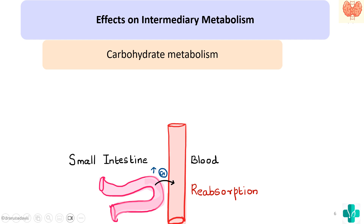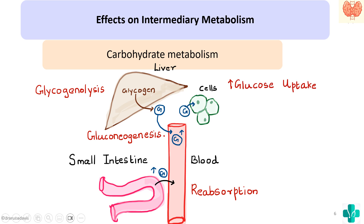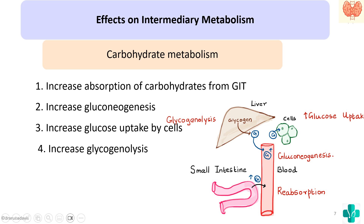Secondly it will promote gluconeogenesis — producing more glucose from other sources. It will also stimulate glycogenolysis, since glycogen is a storage form of glucose. The thyroid hormone will also increase the uptake of glucose by the cells. So in summary: it increases reabsorption of carbohydrate from the GI tract, increases gluconeogenesis, increases glucose uptake by cells, and increases glycogenolysis.